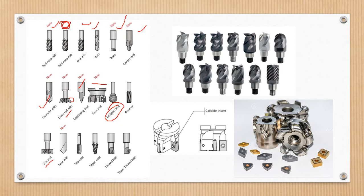Next is the engraving tool for engraving impressions and symbols. Next is the tapping tool — tapping is a threading operation. Thread milling is also a threading operation. This is the outer diameter.